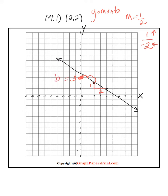Now I have all the information I need for the equation of my line. So y equals negative one-half x plus three.